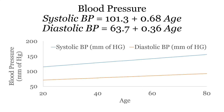How do we estimate blood pressure? This is the formula to calculate systolic blood pressure: 101.3 plus 0.68 times the age. And the diastolic is 63.7 plus 0.36 times age.